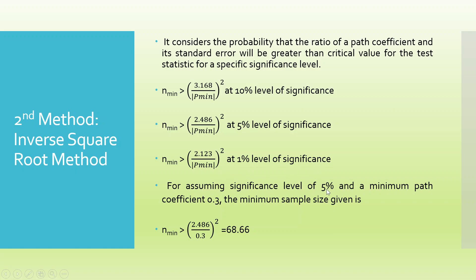Let's assume that we are working on 5% level of significance. Therefore, I will be using this formula. And a minimum path coefficient, the minimum path coefficient is 0.3. So the minimum sample size required is N minimum should be greater than 2.486 divided by 0.3. We are taking the absolute value, even if it is negative. Even if your beta is negative, you will take the absolute value. So 2.486 divided by 0.3 and its square, so 68.66. It means that you will require a sample size of 69 or 70. This is the second method.